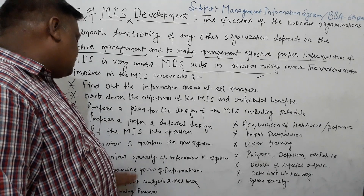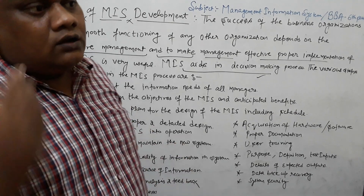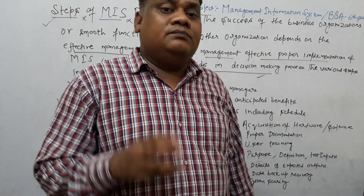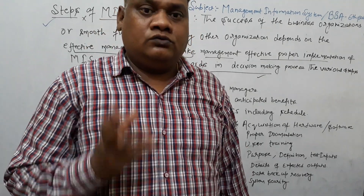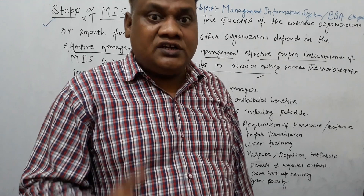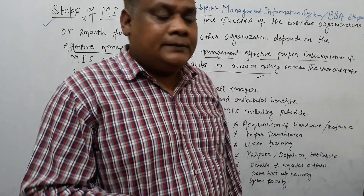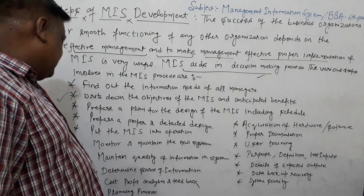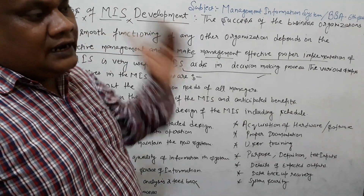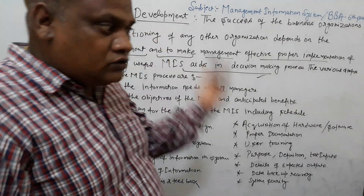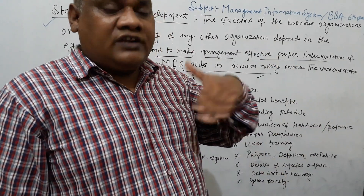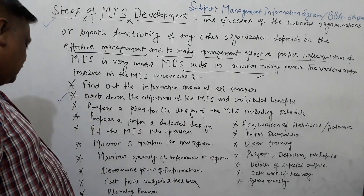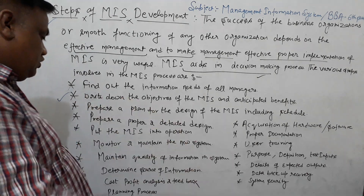Quality of information is most important. The quality of information must be accurate, robust, and timely — provided from the right sources to the authorized person at the right place and right time. Maintaining quality of the system requires identifying the total mind sources of information.